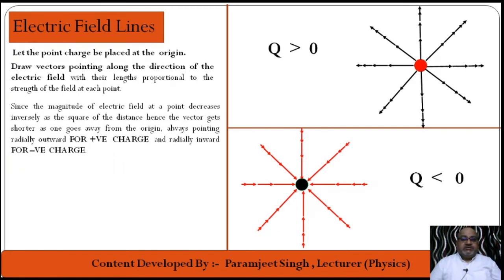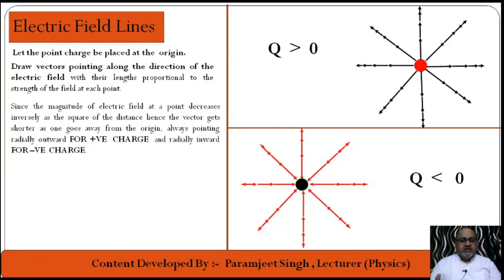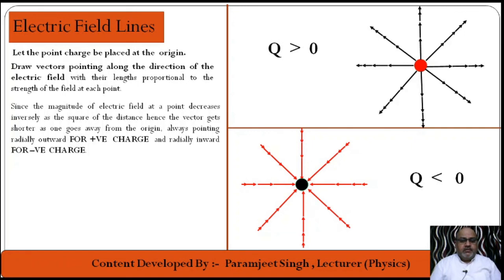The conclusion: for a positive charge, the electric field is radially outward, and for a negative charge, the electric field is radially inward. These lines are electric field lines. Drawing these lines gives us the view about the electric field — the strength and direction of the electric field. These lines are drawn along the force experienced by a positive test charge, keeping the length of the vector according to the strength of the field at that point.